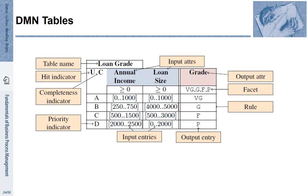How do DMN tables work? We have an example of a DMN table here. Each table has a table name — that is 'loan grade' in this example. We have to specify a hit indicator, whether we want to uniquely identify one row or if several can be chosen. The completeness indicator says if at least one of the rules has to apply, or whether it is also possible that none of the rules apply. The priority indicator says which rules to choose first.